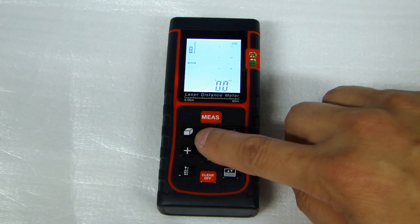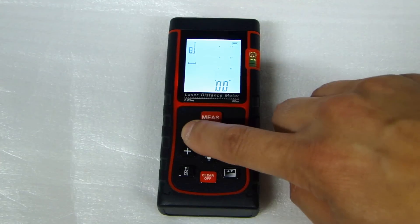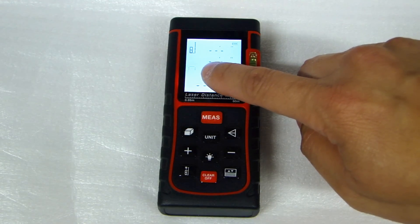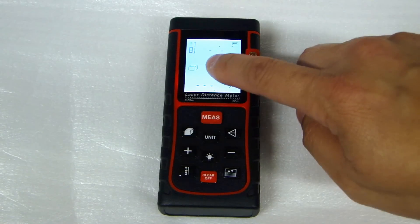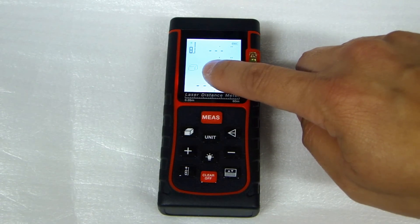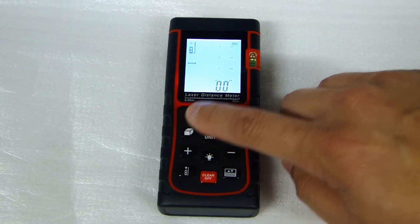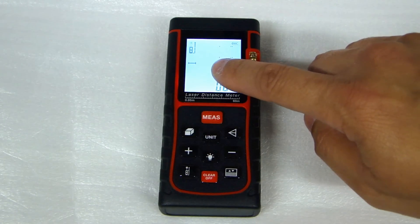Now if you press this square icon here, it will toggle to measuring area. Press it again and it will toggle to measuring volume. Press it again and it will be back to measuring the length or distance.